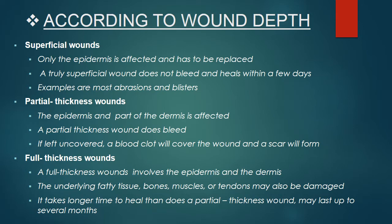According to wound depth: superficial wounds affect only the epidermis. A truly superficial wound does not bleed and heals within a few days; examples are most abrasions and blisters due to sun heat. Partial thickness wounds affect the epidermis and part of the dermis; they do not bleed, and if left uncovered, a blood clot will cover the wound and a scar will form. Full thickness wounds involve the epidermis and dermis; the underlying fatty tissue, bones, muscles, or tendons may also be damaged. They take longer to heal than partial thickness wounds and may last up to several months.